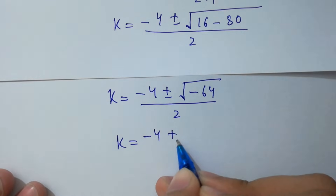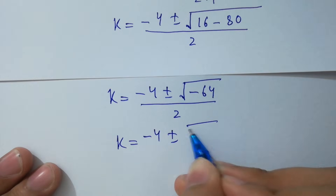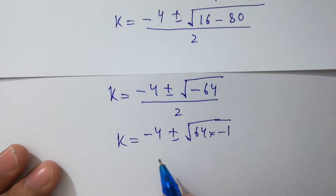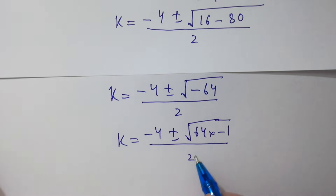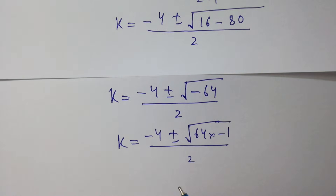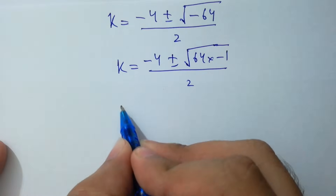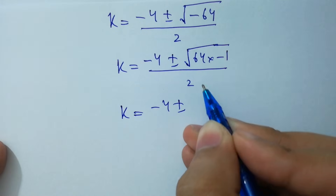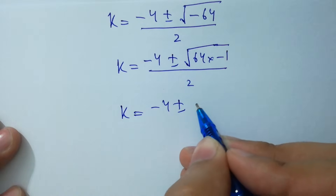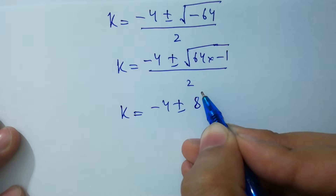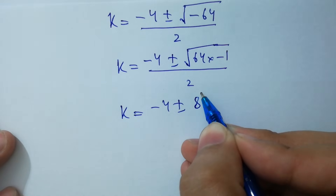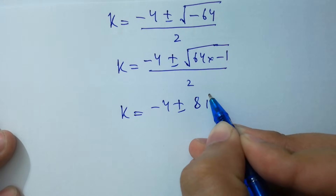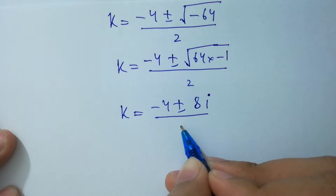That gives k equals minus 4 plus or minus the square root of negative 64, over 2. The square root of 64 is 8, because 8 squared equals 64. And the square root of negative 1 equals i. So we have k equals minus 4 plus or minus 8i, over 2.